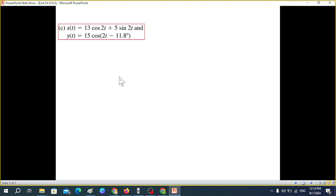And finally, we have this signal which is combination of two signals: x(t) = 13 cos(2t) + 5 sin(2t) and y(t) = 15 cos(2t - 11.8°). YT is in simple cosine form. So first XT we convert this into cosine form. They have to be in the same form for adding.